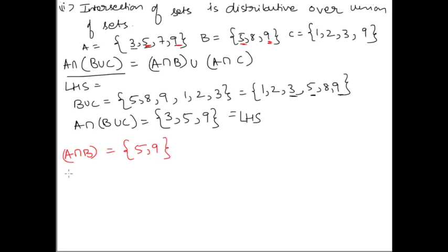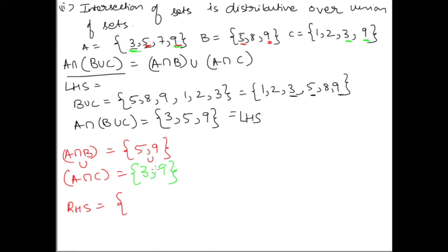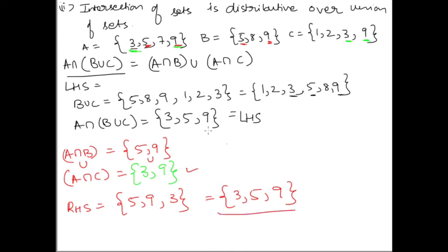And A intersection C: 3 is common and 9 is common, so A intersection C = {3, 9}. For the RHS, we take the union of {5, 9} and {3, 9}. Listing without repeating, in ascending order: {3, 5, 9}. We see that {3, 5, 9} equals the LHS, so LHS equals RHS.